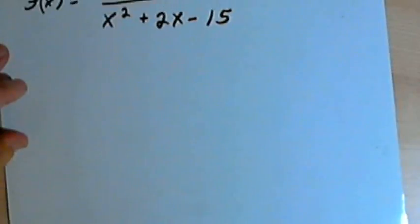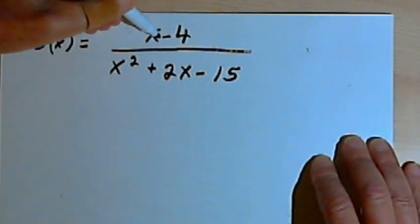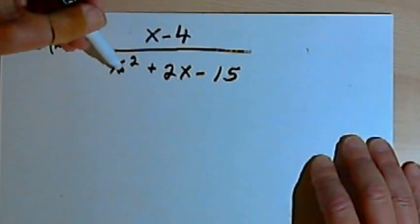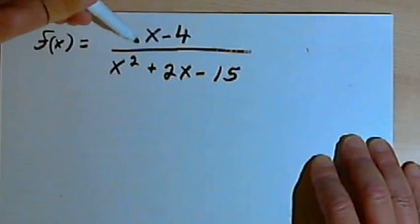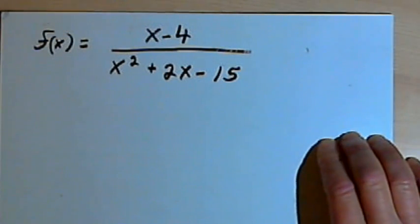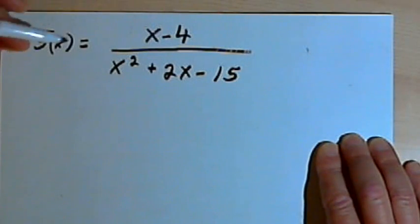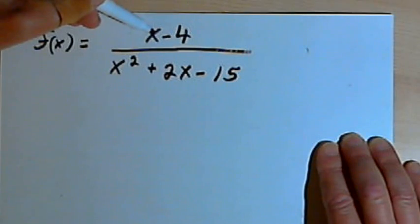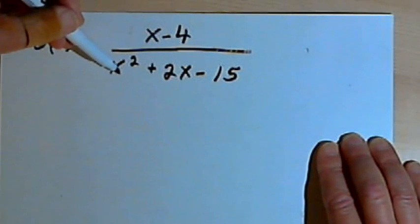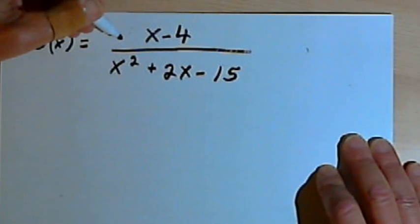Here's the first problem. I've got this rational function: f(x) equals x minus 4 over x squared plus 2x minus 15. I want to find out whether its graph will intersect its horizontal asymptote. The first step is to find out what the horizontal asymptote is. When the degree of the polynomial in the numerator is less than the degree of the polynomial in the denominator — that's what I've got here — the horizontal asymptote is going to be zero.